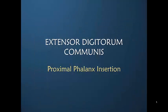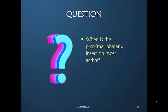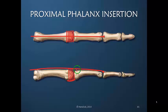The proximal phalanx insertion, as we discussed, is active when the MP joint is hyperextended. In normal active finger motion, this little slip of an insertion — which many times is missing anatomically — is actually inactive. There's no tension here during normal finger flexion and extension to a neutral position.